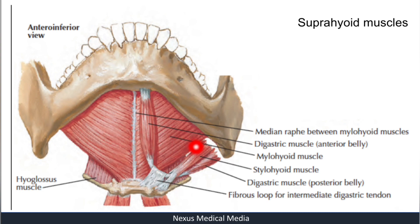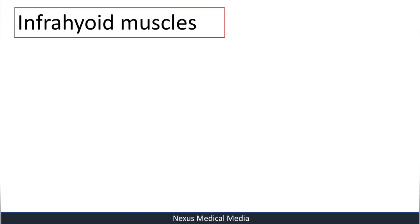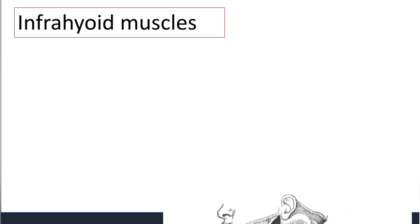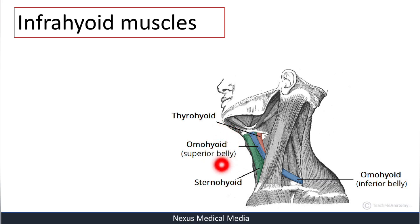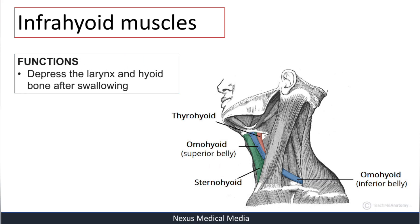Now let's talk about the infrahyoid muscles, which are below the hyoid bone. They include the thyrohyoid, the omohyoid — which has a superior belly and an inferior belly — and the sternohyoid muscle shown here in green. So: thyrohyoid, omohyoid, and sternohyoid. The main function of the infrahyoid muscles is depression of the larynx and hyoid bone after swallowing.